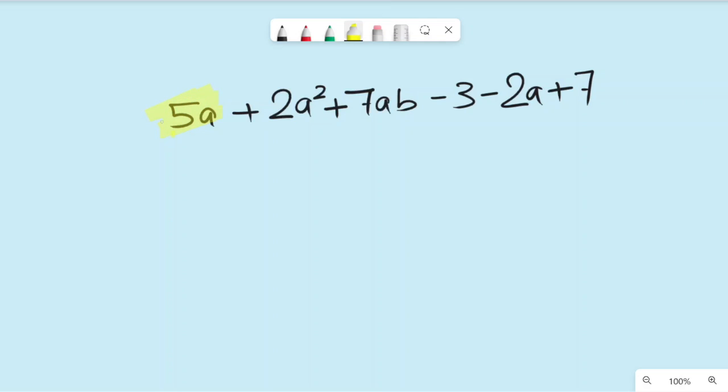I can see 5a, which is a positive 5a because there is no sign before it, and 2a, a negative 2a. They are like terms, 5a and negative 2a.